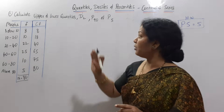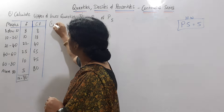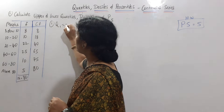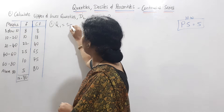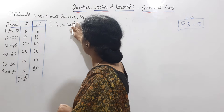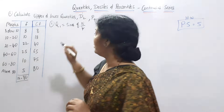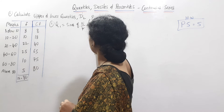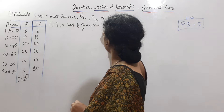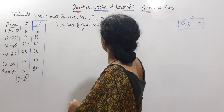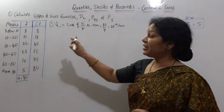We have two formulas. First we'll go for upper quartile and lower quartile — both Q1 and Q3. First we'll take Q1. So Q1 first formula is size of n/4th item — note: no n+1 here, it is n by 4th item. So here N is 80, so 80 by 4 means the 20th item. Where does this 20th item lie?